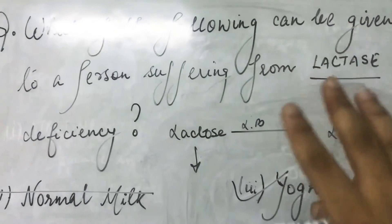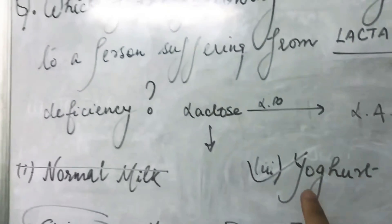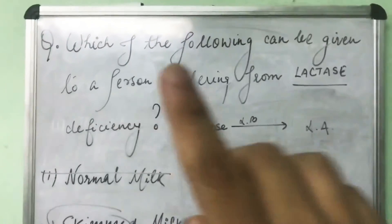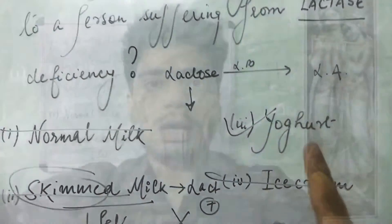So the answer to the question — which of the following can be given to a person suffering from lactase deficiency — is yogurt. I hope you liked the video. Stay tuned for tomorrow when I will discuss another question from AIIMS May 2018 for the postgraduate entrance examination. Thank you.